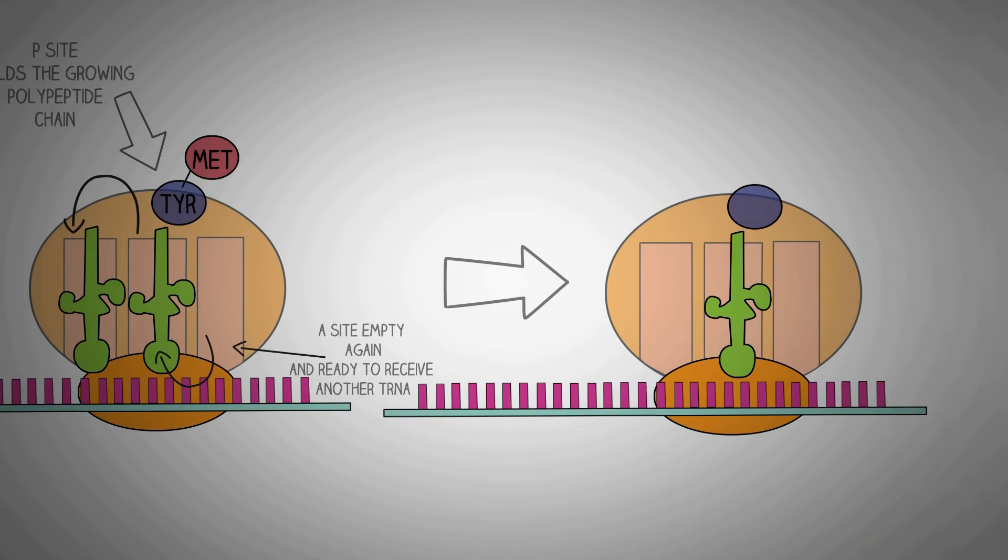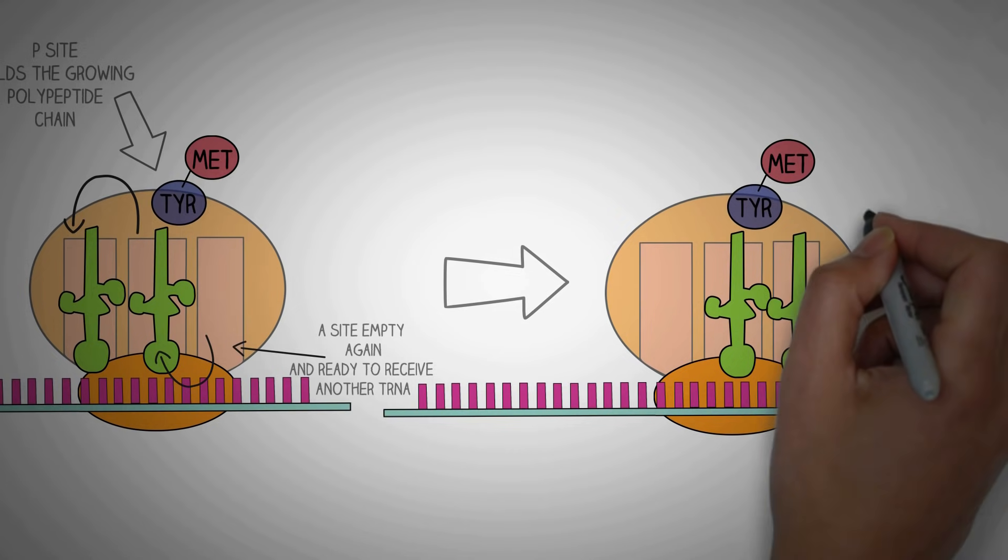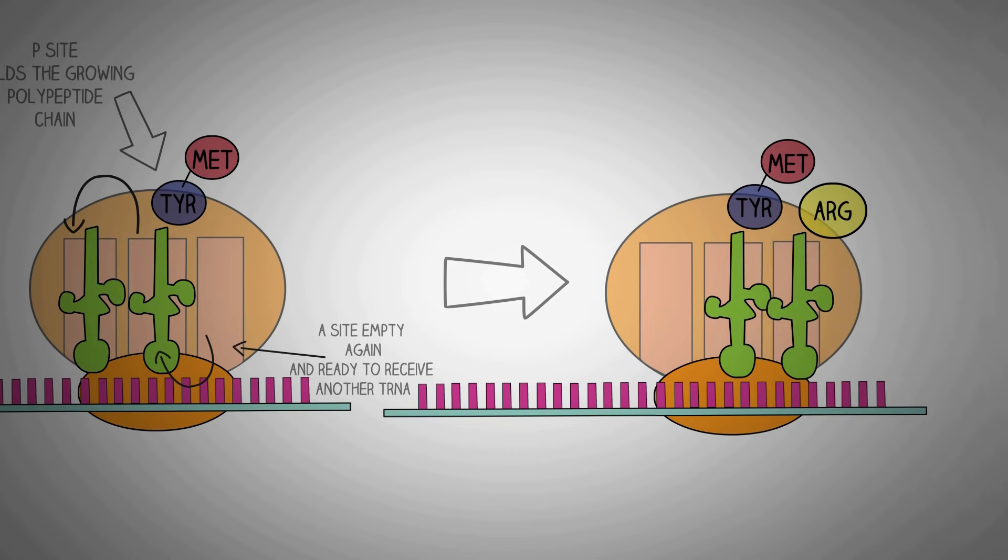For example, if the next code is CGU, the tRNA that will enter the A site will have the amino acid arginine attached to it. Next, the bond will form between the small polypeptide chain and the amino acid on the tRNA in the A site.